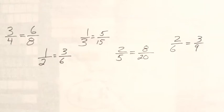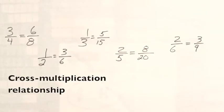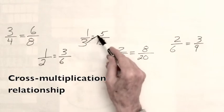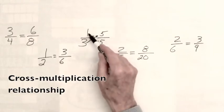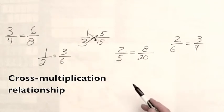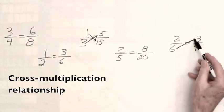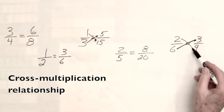They might also notice the cross-multiplication relationship. Three times five is equal to fifteen, and one times fifteen is fifteen, so these fractions are equal. Six times three is eighteen, two times nine is eighteen.